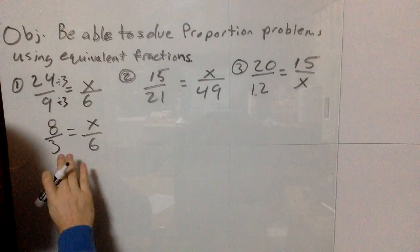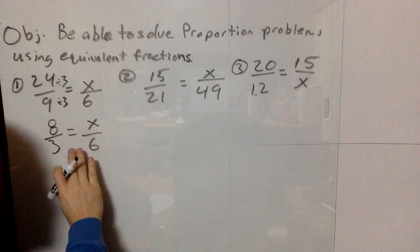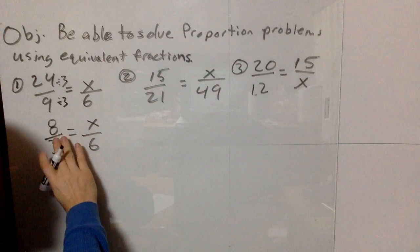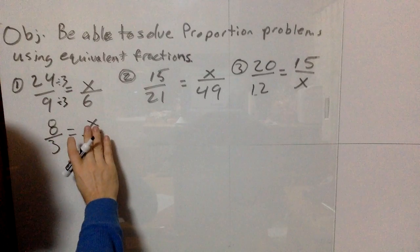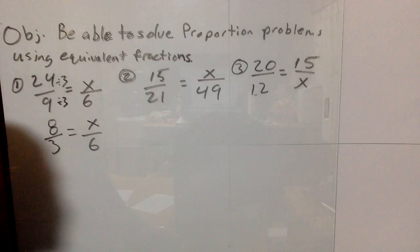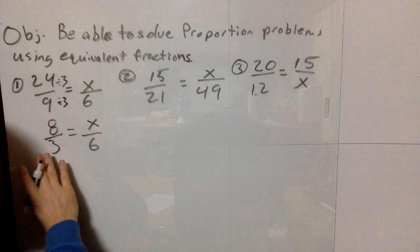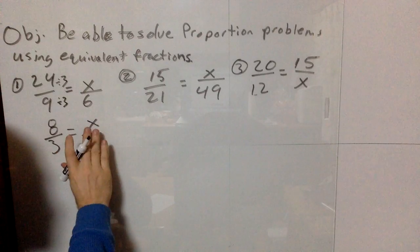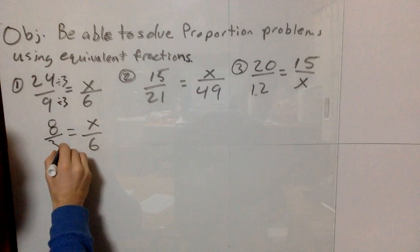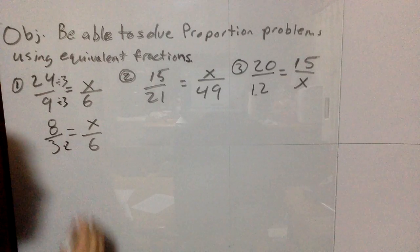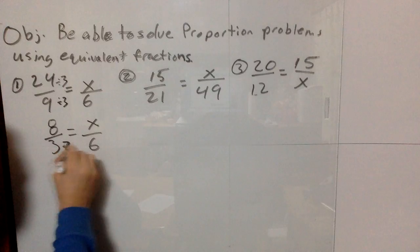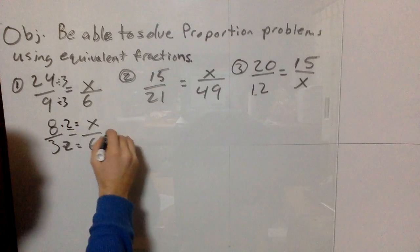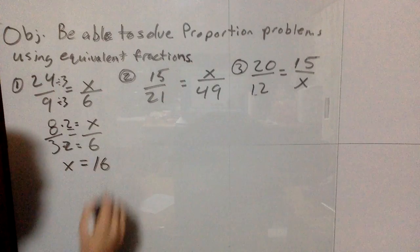We can see that 3 times something is 6. If 3 times something is 6, then 8 times that same number gives us an equivalent fraction. 3 times 2 is 6, so if we multiply 8 times 2, we get x equals 16.